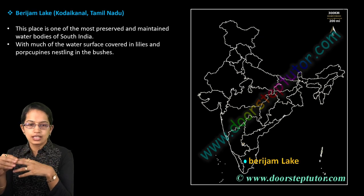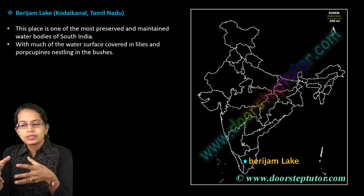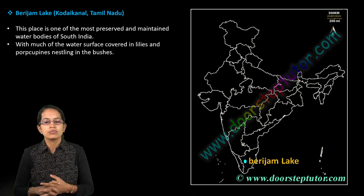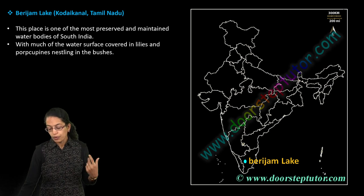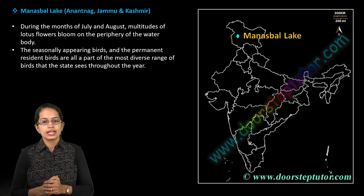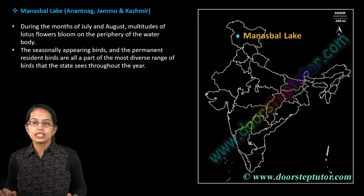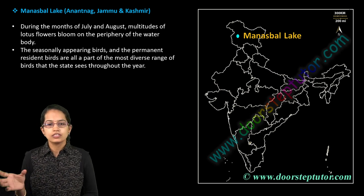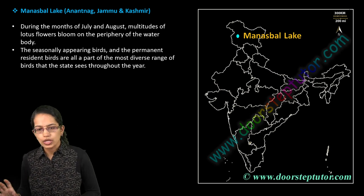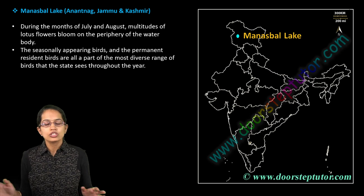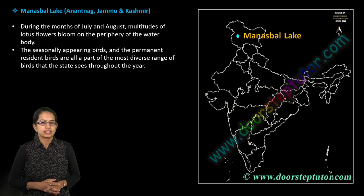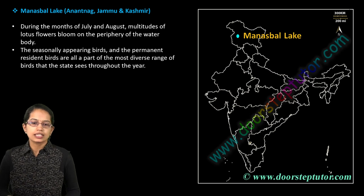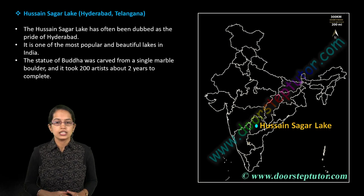Berijam Lake is located near Kodaikanal in Tamil Nadu. It is one of the well-preserved areas in South India, with numerous water lilies and porcupines seen in the area. Manasbal Lake is located in Anantnag. It is less heard of, but during July and August there are lots of lotus flowers, along with numerous migratory and seasonal birds seen throughout the year.